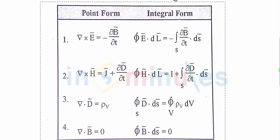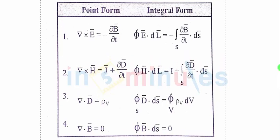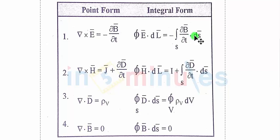Maxwell's first equation in integral form is again obtained from Faraday's law of electromagnetic induction. It states that the closed line integration of E-bar dot dl-bar is equal to minus the surface integration of the partial derivative of B-bar with respect to time. The left-hand side is the line integral and the right-hand side is the surface integral, and both come out to be exactly the same.